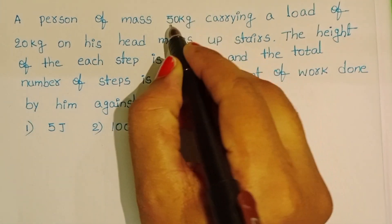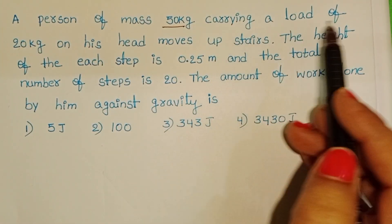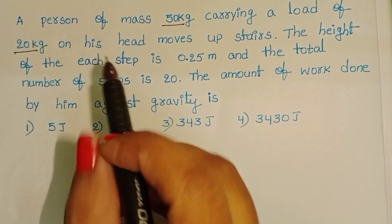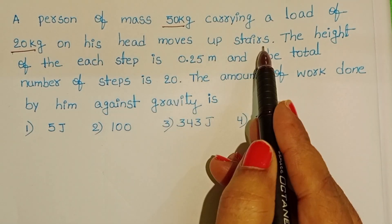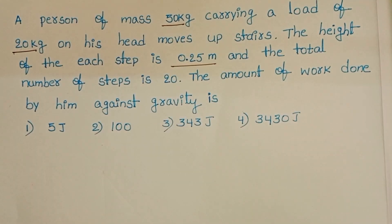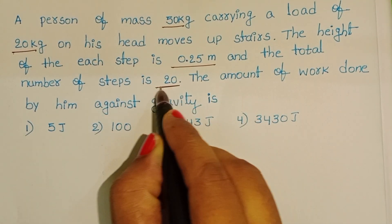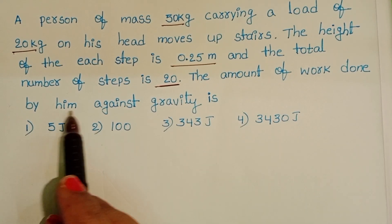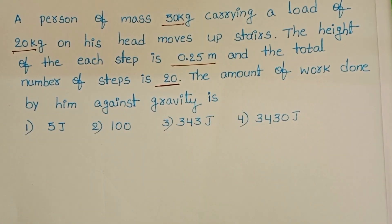A person of mass 50 kg carrying a load of 20 kg on his head moves upstairs. The height of each step is 0.25 m and the total number of steps is 20. The amount of work done by him against gravity is?